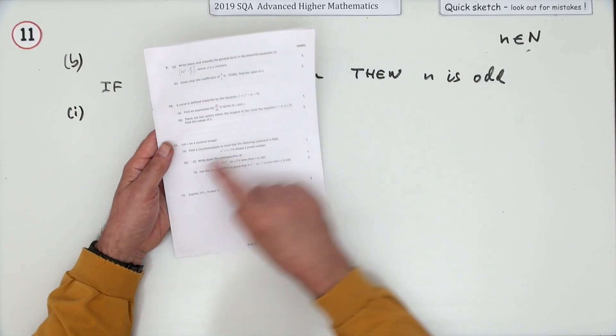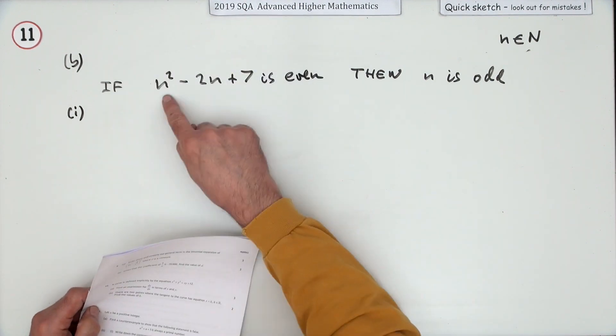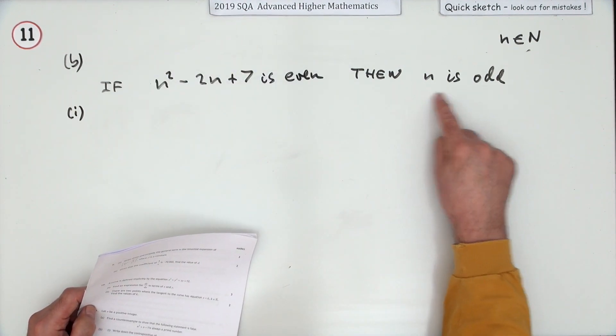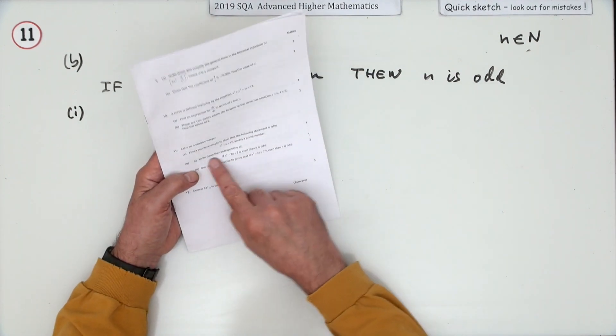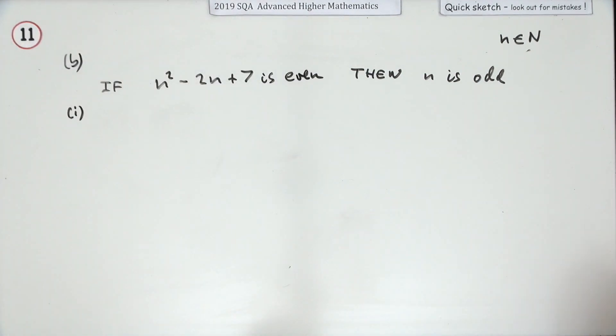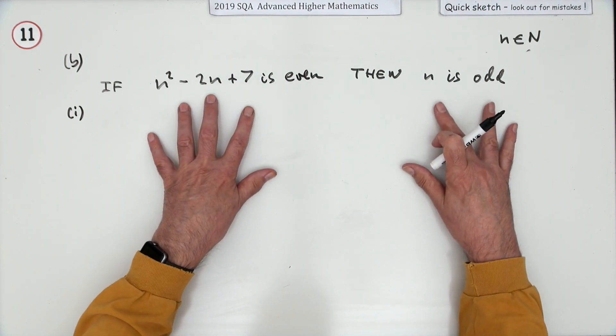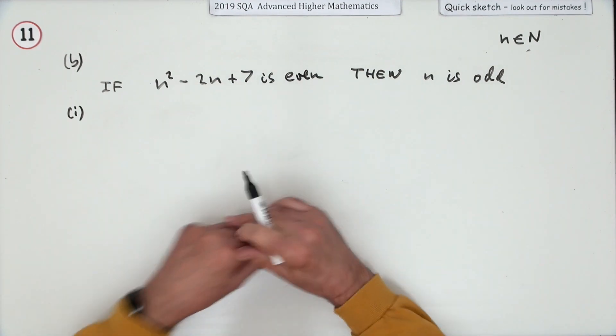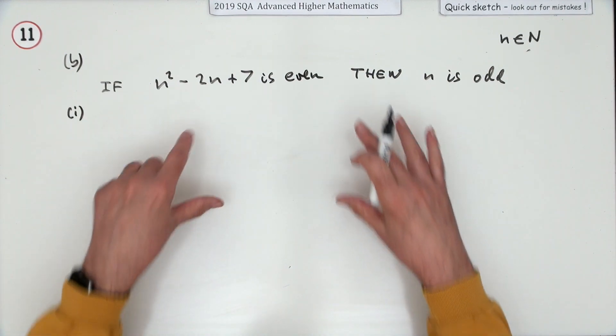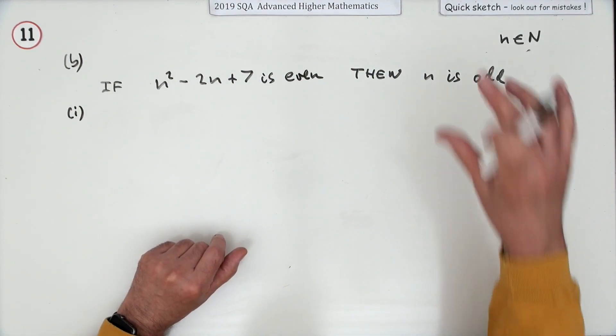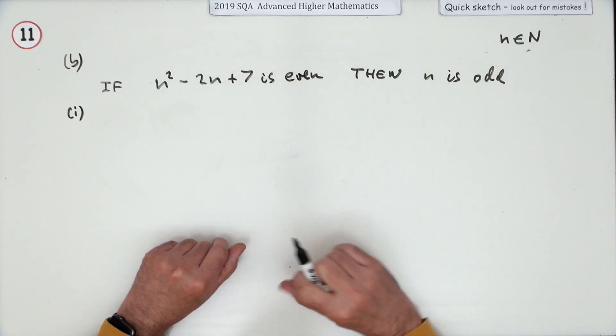Part b: we're given a statement, if n²-2n+7 is even then n is odd. What you've to do is write down the contrapositive for one mark. The contrapositive means to take the two parts of the statement and write them the other way round, but you have to do the inverse of the converse, the opposite of each of those.